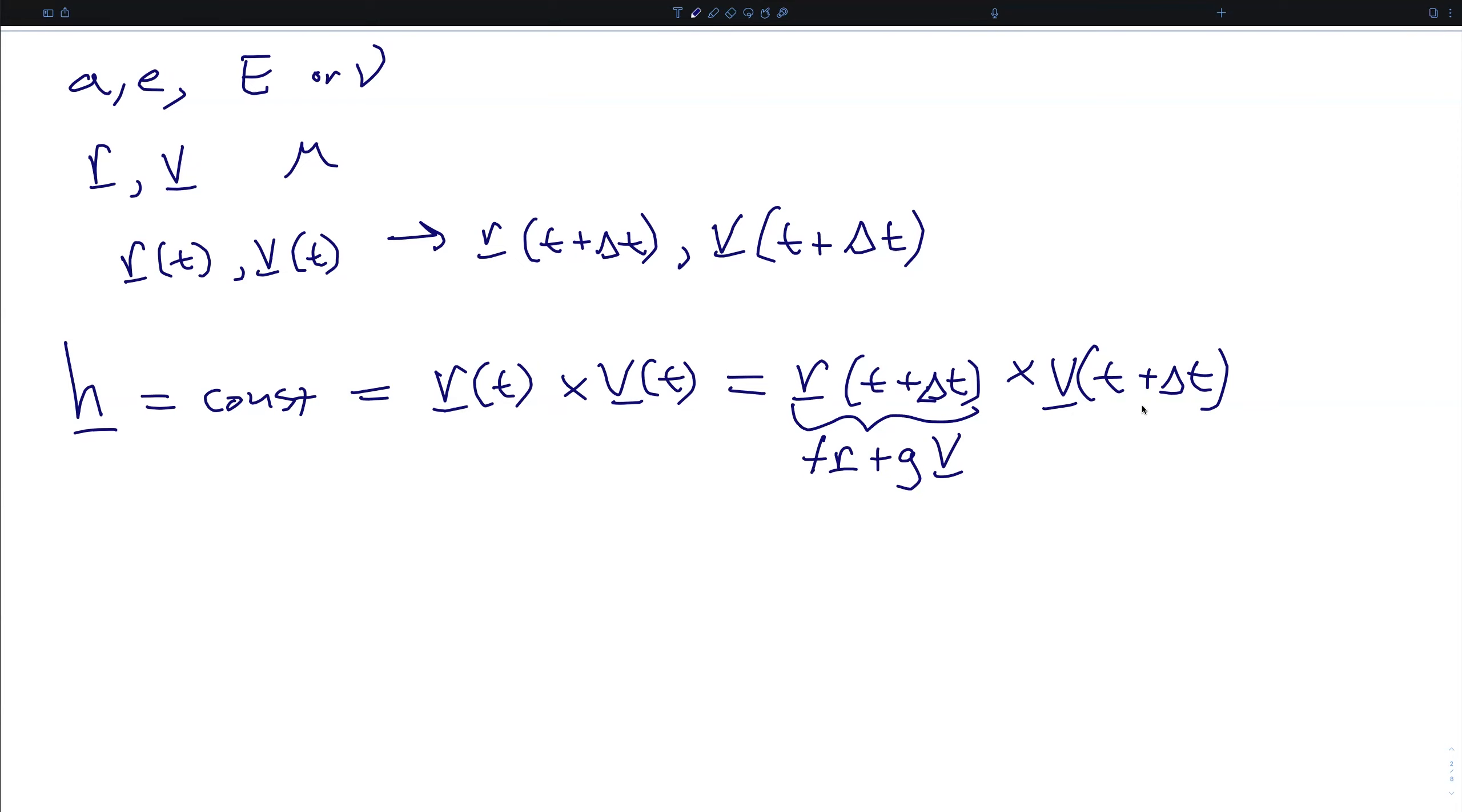And here, we're going to briefly drop the variable so it should be understood that anything without parentheses refers to the R and the V at the initial time t. Similarly, v at t plus delta t is f dot r plus g dot v. If we carry out the cross products, all terms of R cross R and V cross V automatically go to zero, and so the only thing that is left will be...